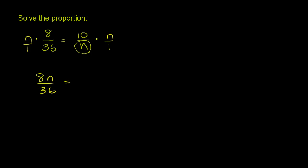And then that will be equal to 10 over n times n over 1. This n and that n cancel out, and you'll have 10 over 1, or just 10.